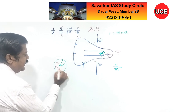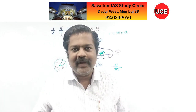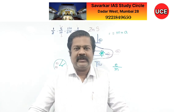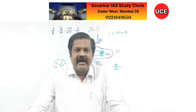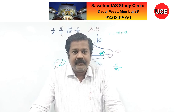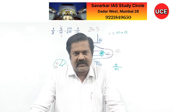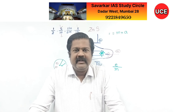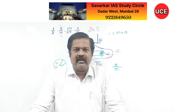Thomson says electrons are embedded within this sphere of positive charge, like seeds in a watermelon. This model is able to explain the electrical neutrality of an atom, but only that. It is not able to explain a variety of things like spectra, nor how the positive and negative charges coexist. Various things are not explained by this model, and therefore this model is discarded. But it is the first model of an atom.